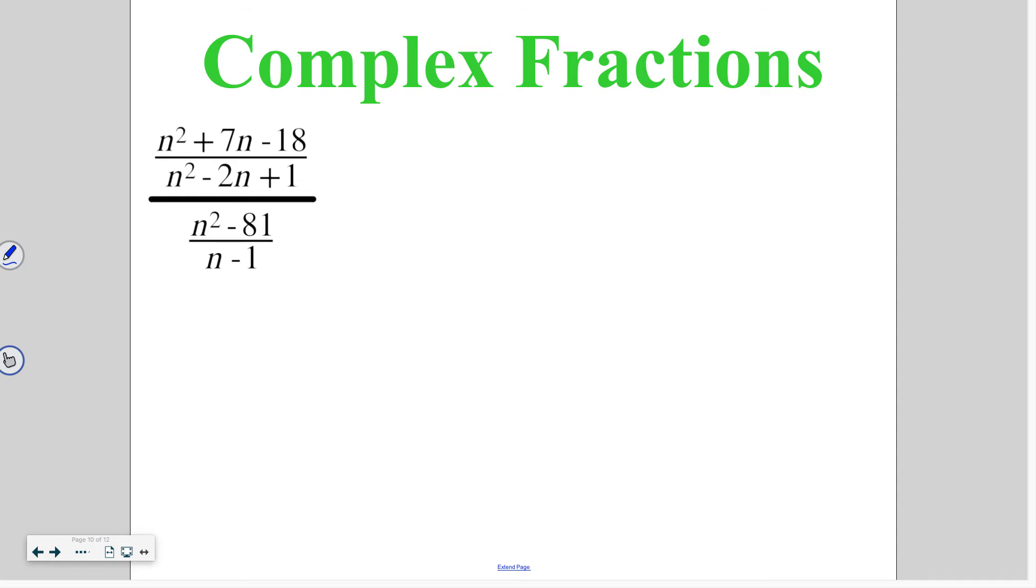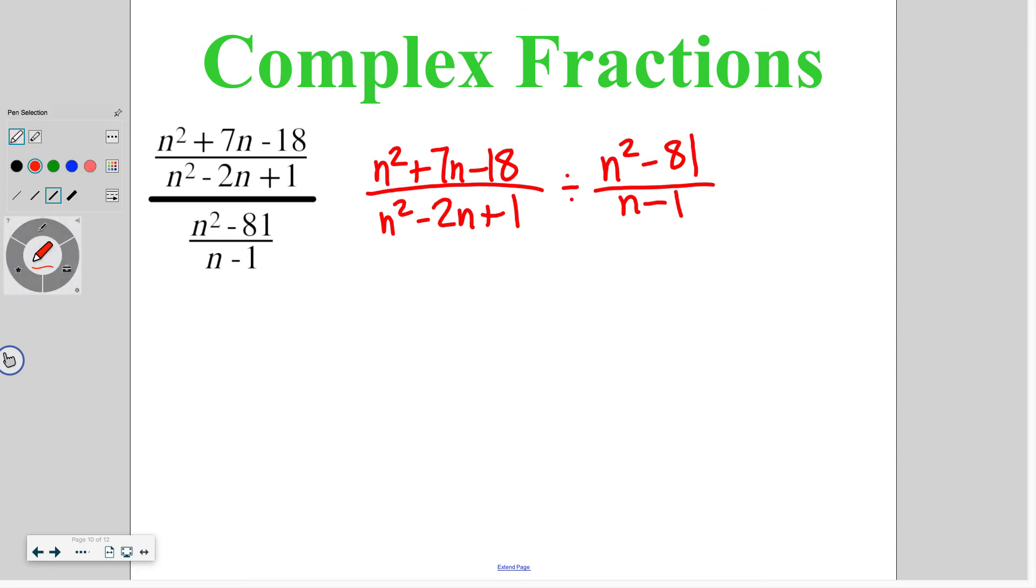This also works when we have expressions that involve addition and subtraction. As you did with simplifying problems, you're going to want to break these down. First we're going to set it up as our division problem. So we've got n squared plus 7n minus 18 over n squared minus 2n plus 1 divided by n squared minus 81 over n minus 1. We're going to go ahead and keep, change, flip. As I'm doing this, I'm going to break it down. So things that multiply to 18 that add up to 7 are negative 9 and 2. So n minus 9, n plus 2.